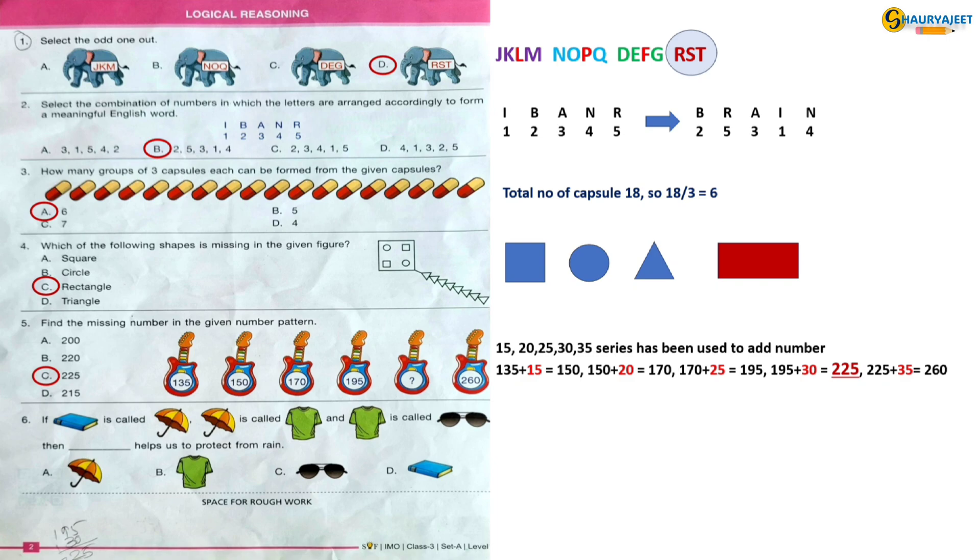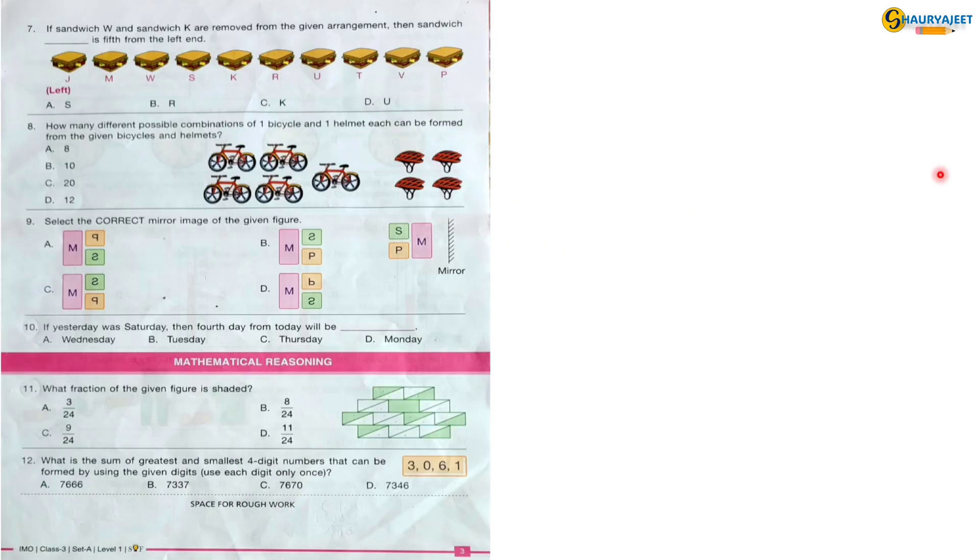Question 6: If book is called umbrella, umbrella is called t-shirt, and t-shirt is called goggle, then what helps us to protect from the rain? We use umbrella in rain, so here t-shirt is umbrella. So the correct option is option B, t-shirt.